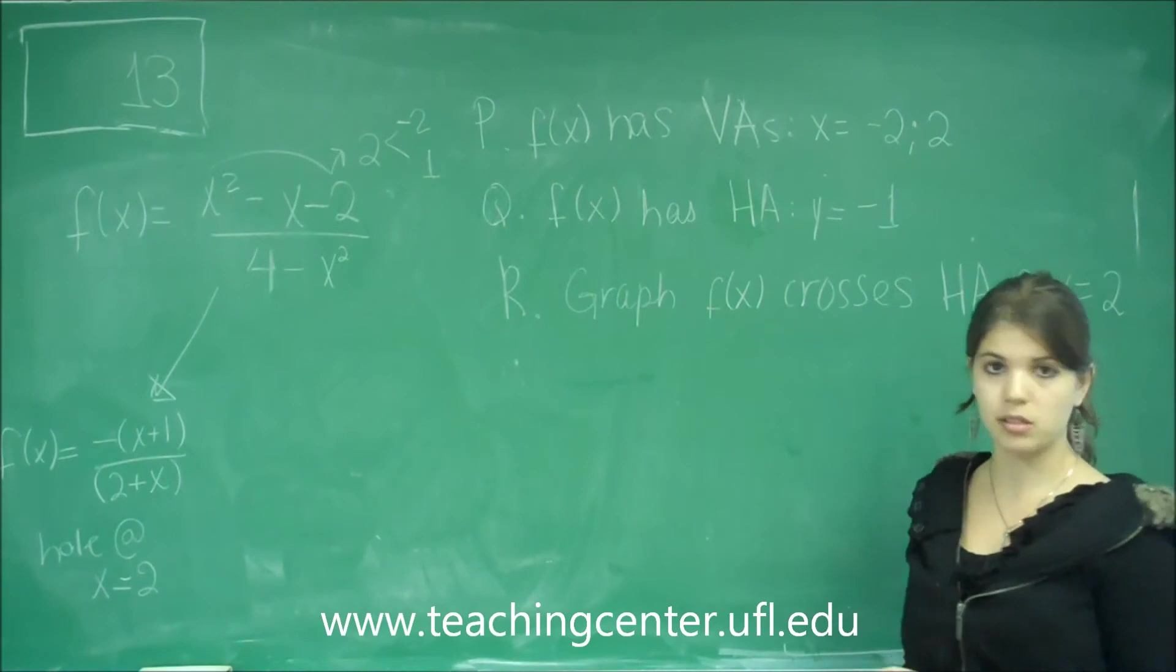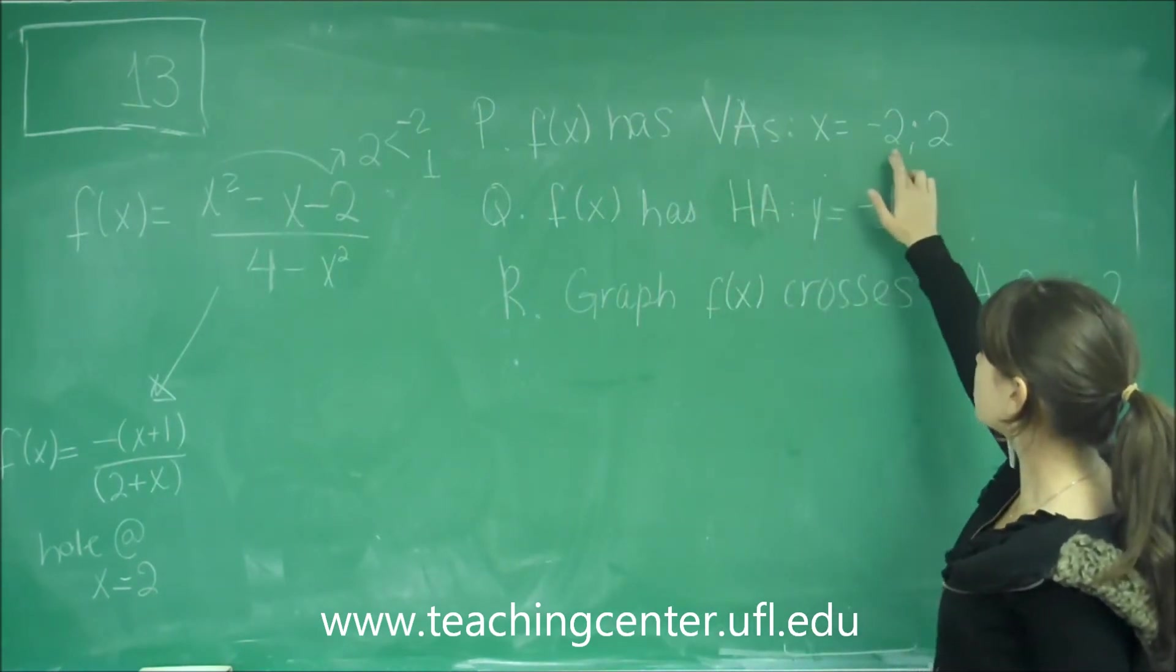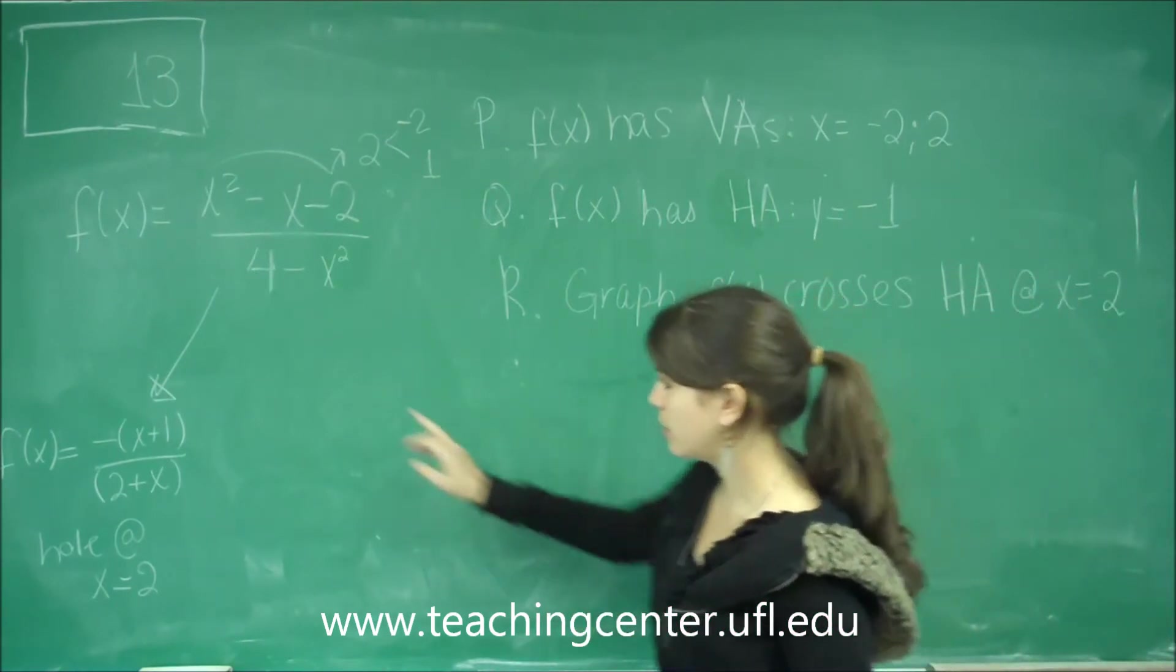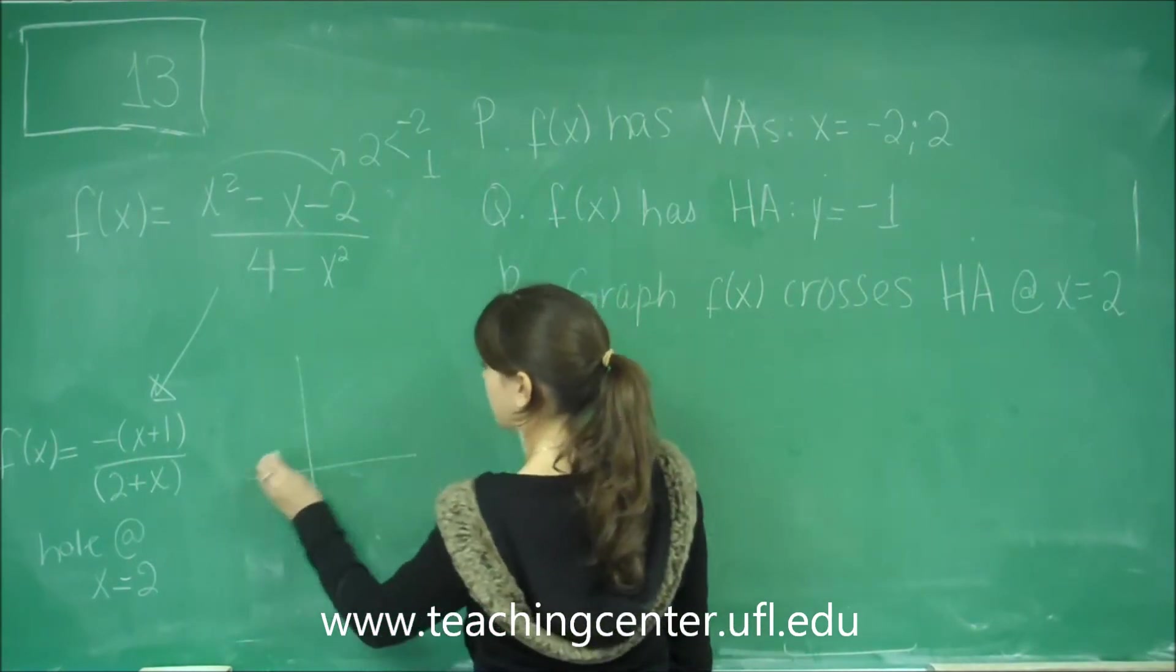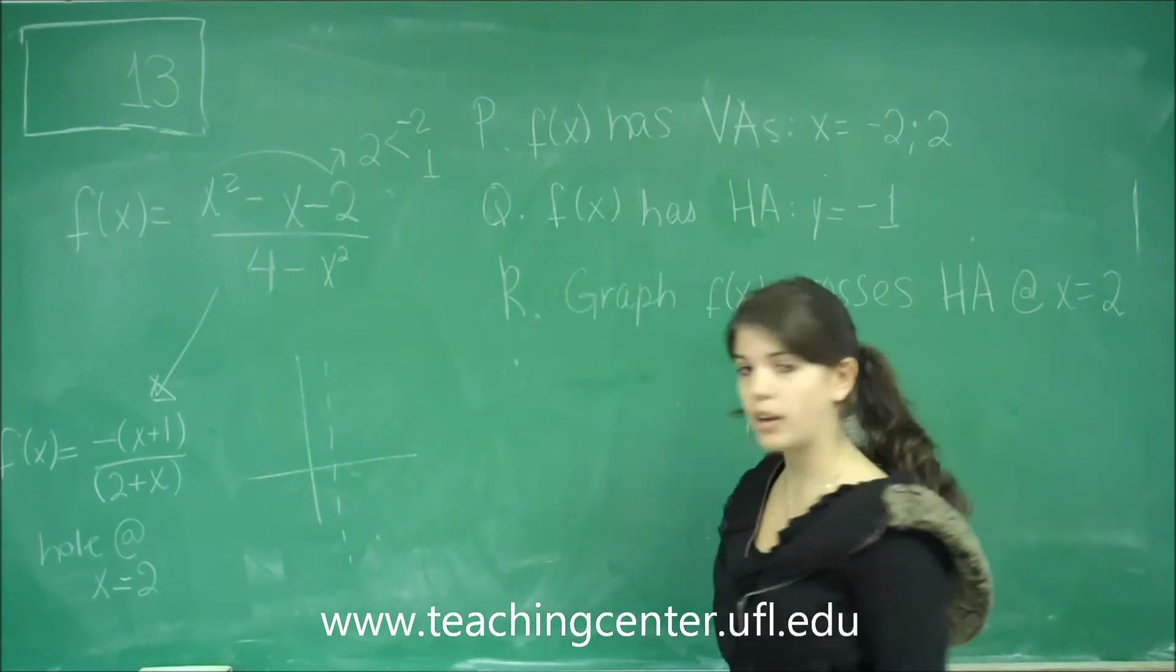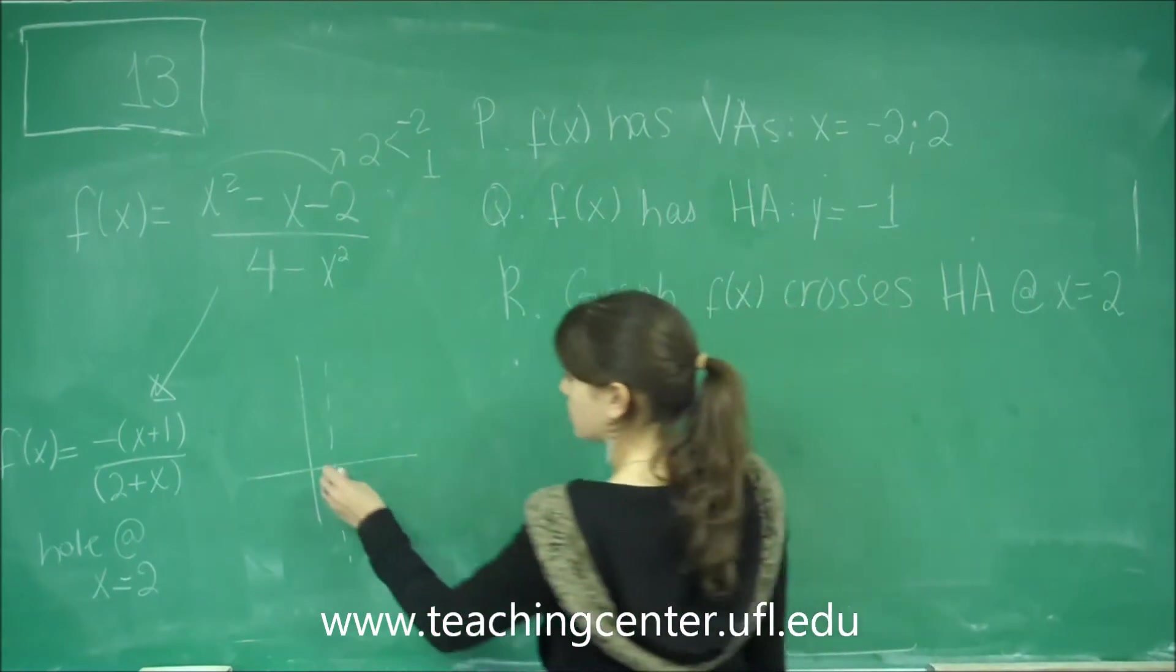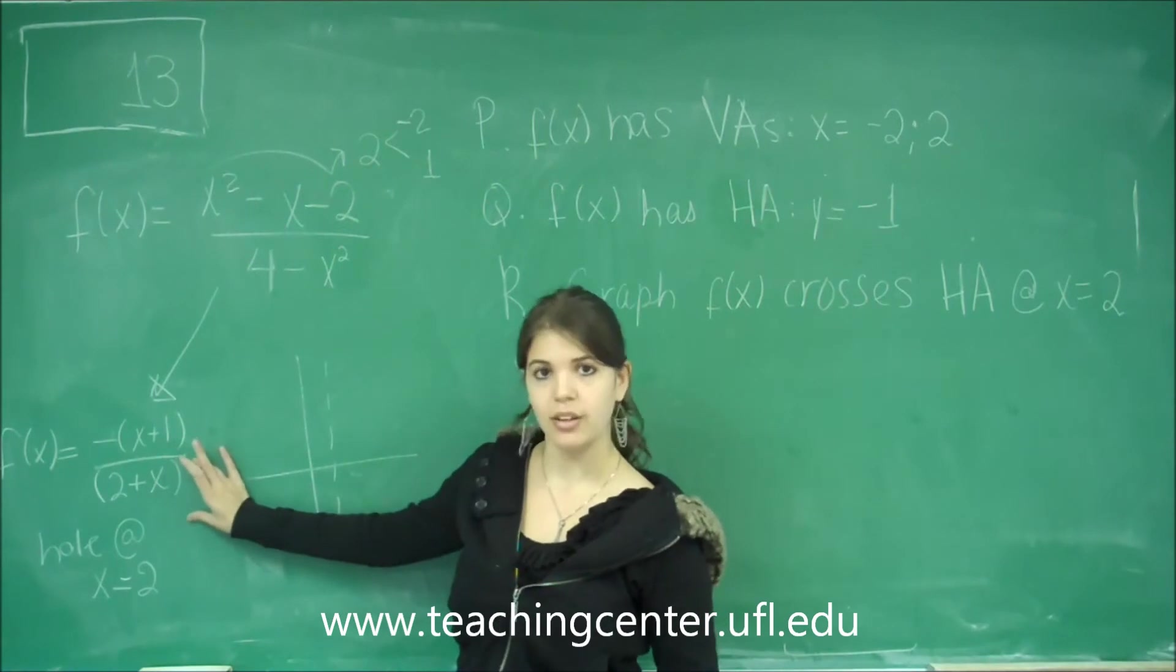So let's go ahead and go through each of the choices now. f of x has vertical asymptotes at x equals negative 2 and x equals 2. So the vertical asymptotes are basically when the graph looks like this at certain x's. That's going to happen when the denominator is equal to 0.